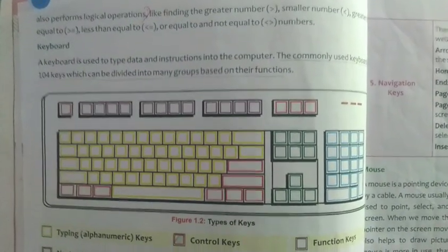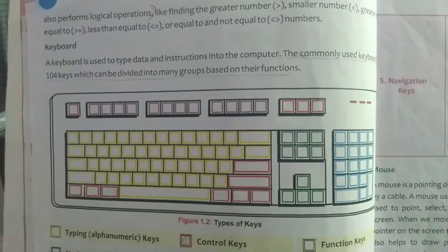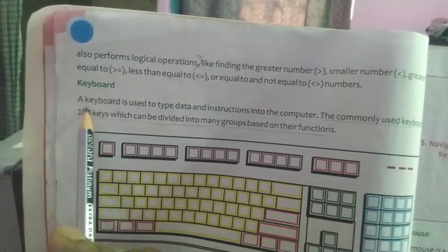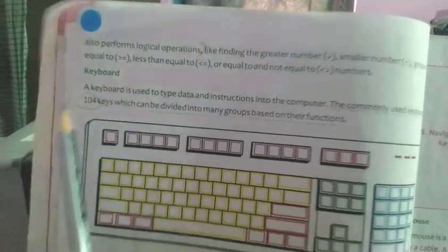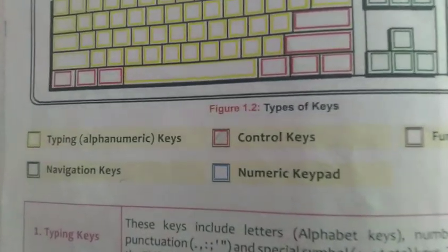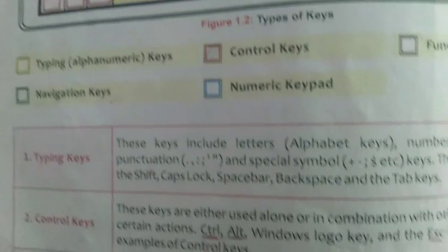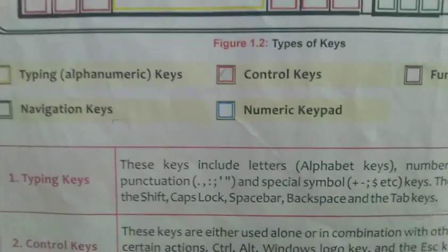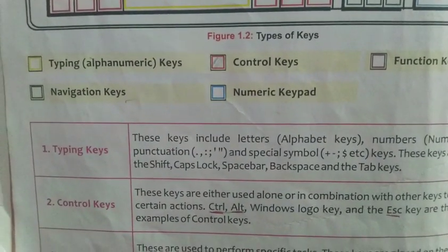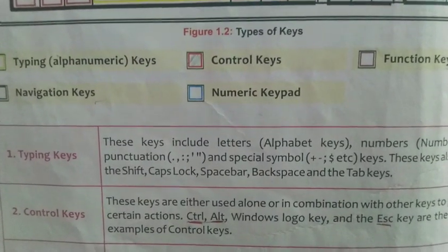I think all of you have seen the keyboard. A standard keyboard has 104 keys. The keyboard is divided into five types: alphanumeric keys, control keys, function keys, navigation keys, and the numeric pad. The first type is typing keys — these include letters, symbols, shift, caps lock, space bar, backspace, and tab keys.